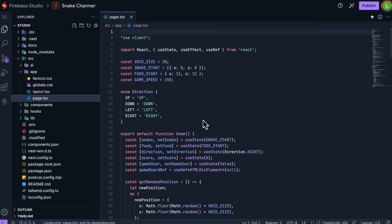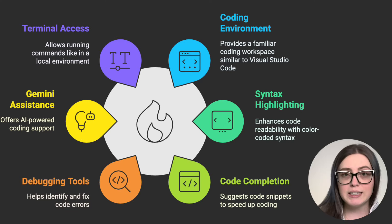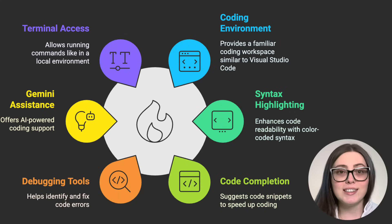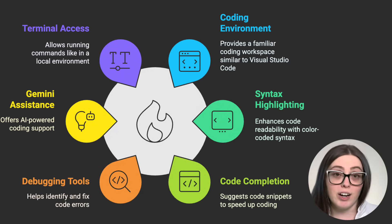AI assistance is great, but sometimes we want to edit the code directly. Firebase Studio gives us a full-fledged coding workspace whenever we're ready to dive in. The coding environment is familiar if you've used Visual Studio Code — it comes with all the features we expect from an IDE. Gemini helps with code completion, explains what different parts of the code do, helps debug issues, and suggests improvements. We also get full terminal access so we can run commands just like we would in a local development environment.